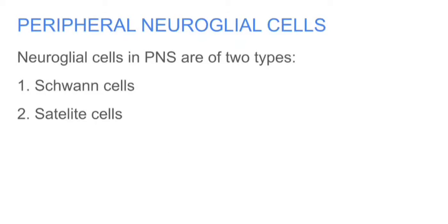Peripheral Neuroglial cells: Neuroglial cells in the PNS are of two types: Schwann cells and satellite cells.